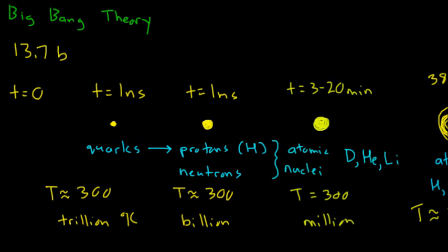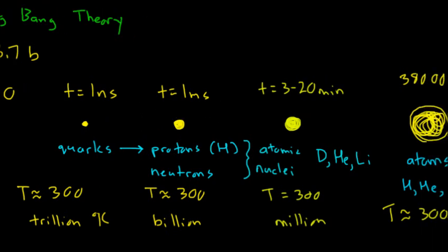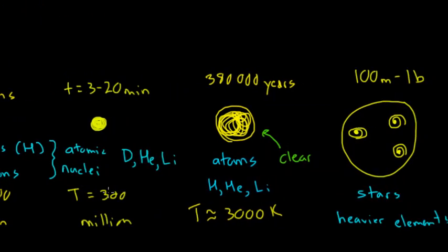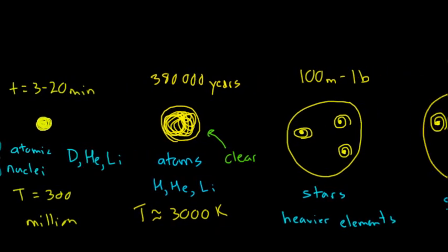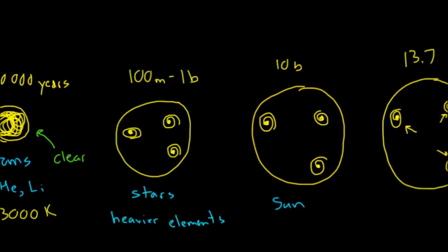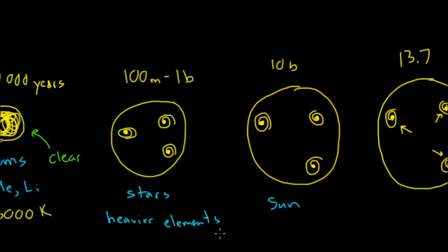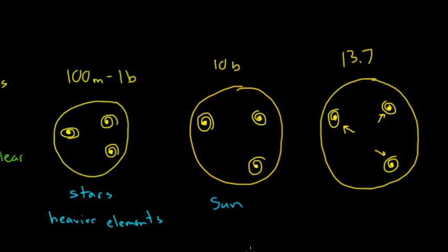And as the universe expanded, it cooled, and various things happened. We had the production of the first atomic nuclei and the first atoms. We have the period when the universe went from opaque to clear. And we have the production of the first stars and galaxies and heavier elements produced in those stars, all the way up to the universe that we see around us today with galaxies that are still expanding.